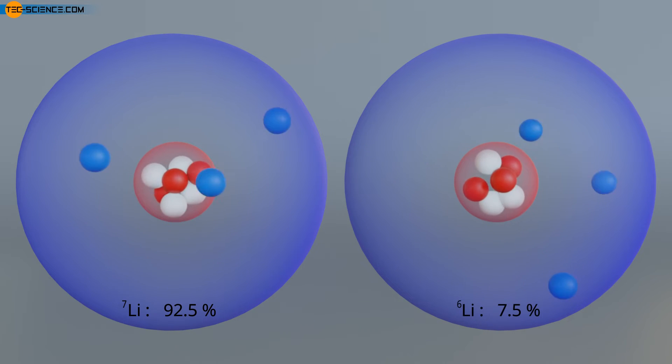Such variations of atoms, which belong to the same chemical element and thus have the same number of protons, but have a different number of neutrons, are also called isotopes. The lithium atom thus has two stable isotopes.